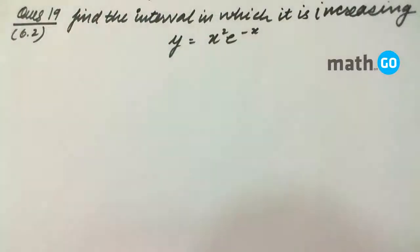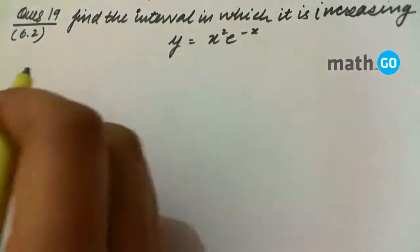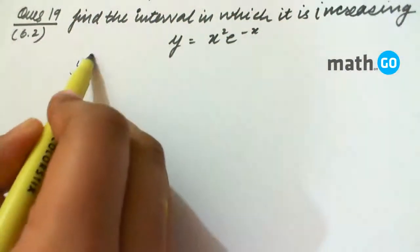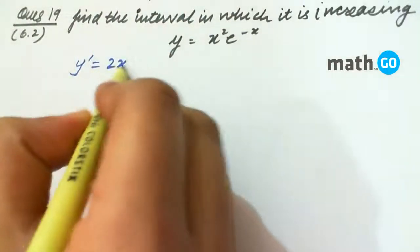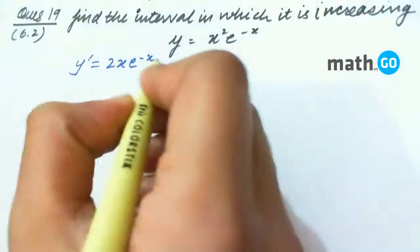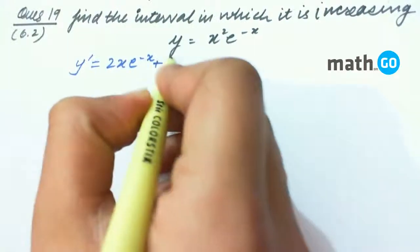Exercise 6.2, question number 19: we have to find the interval in which the given function is increasing. As usual, we find y dash or dy/dx to get 2x*e^(-x) + x²*(-e^(-x)).